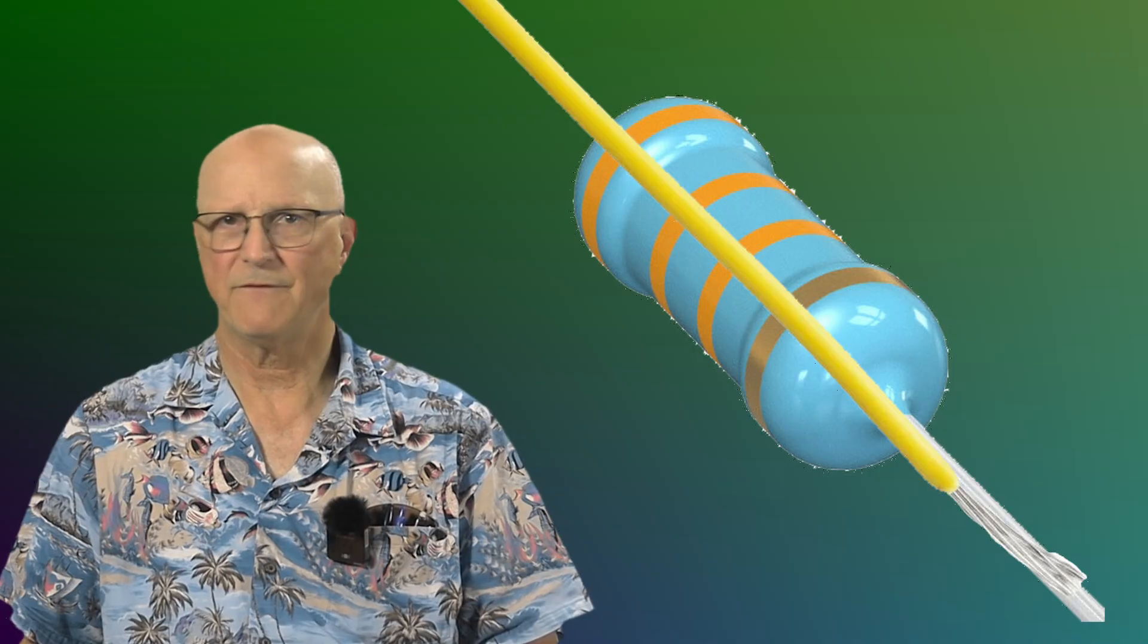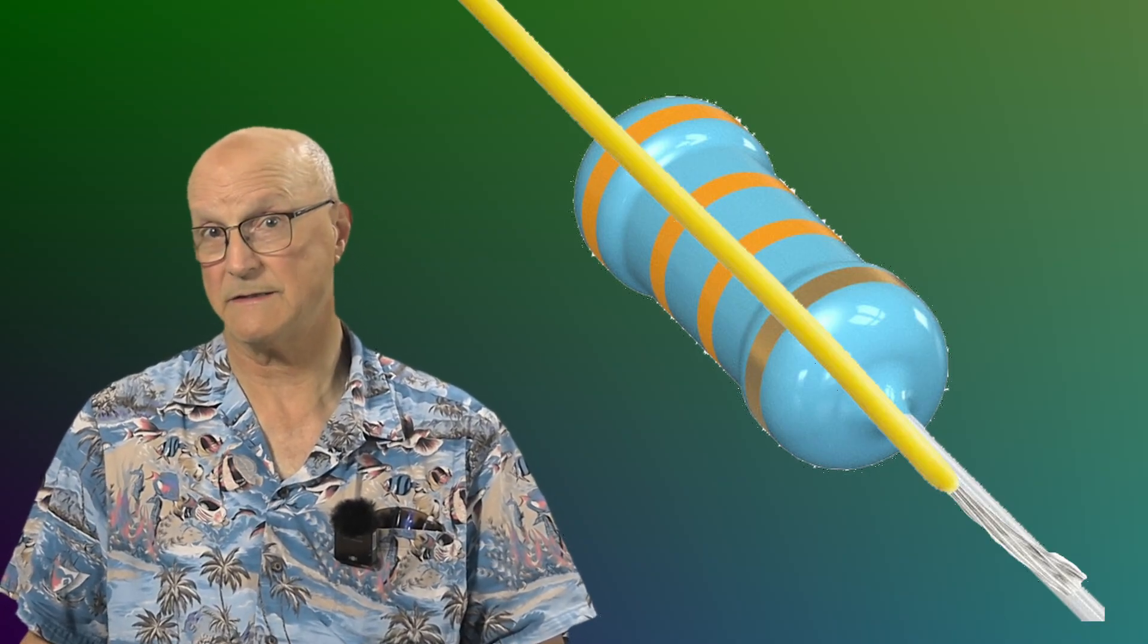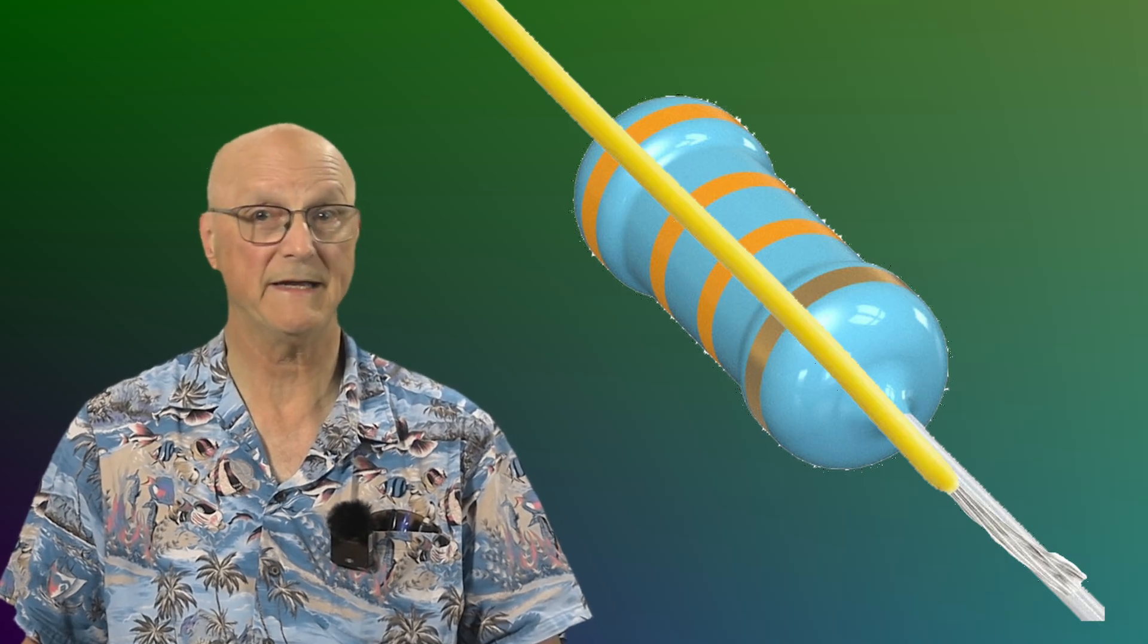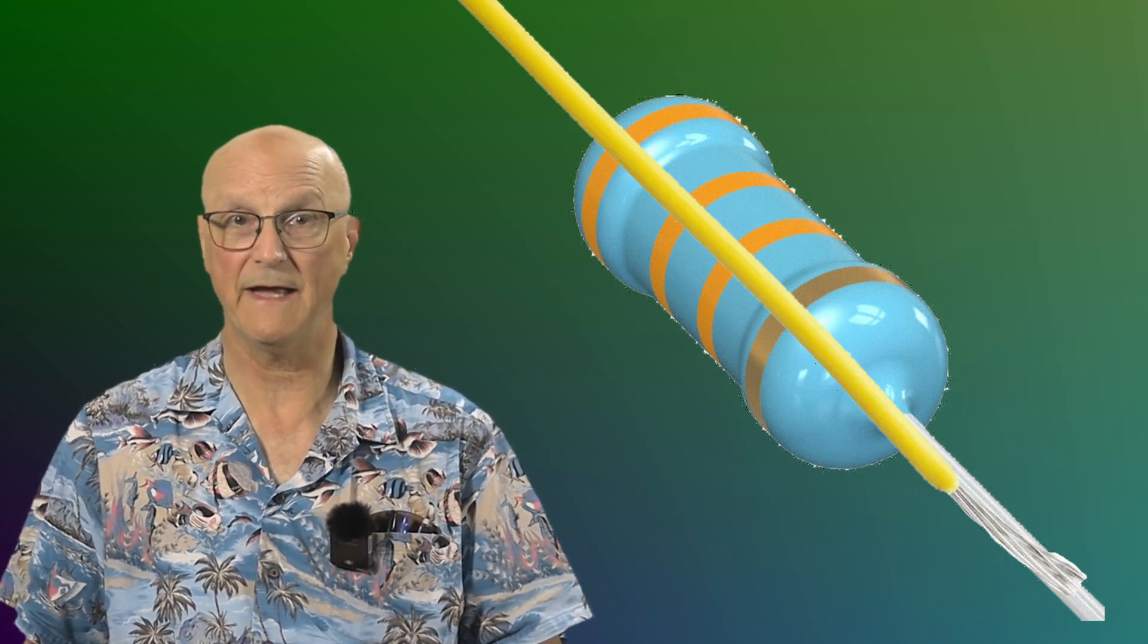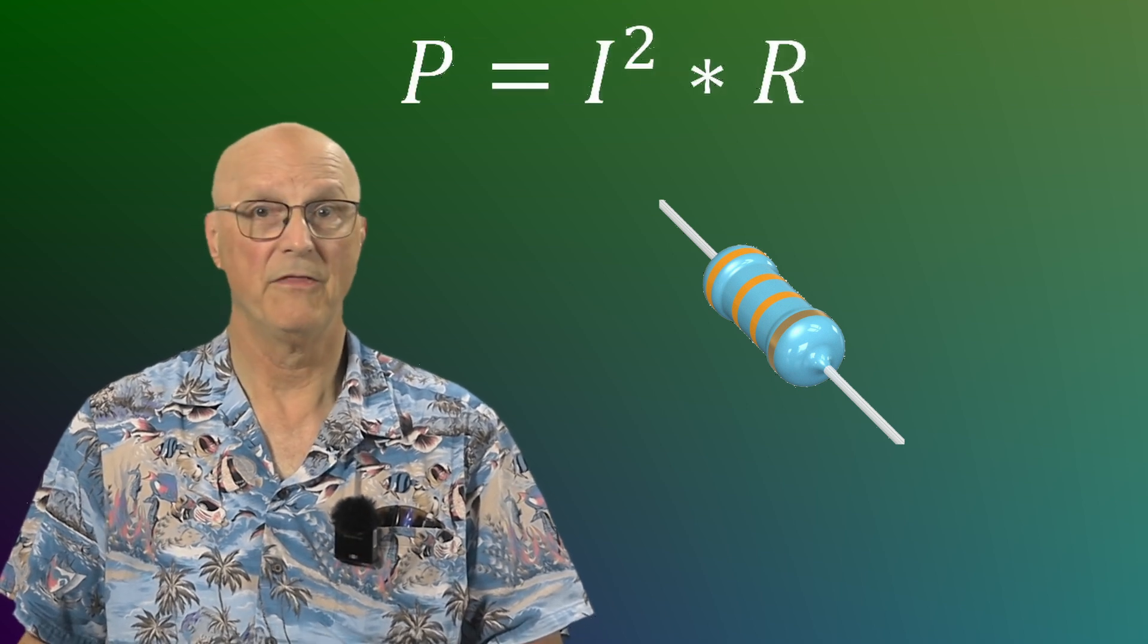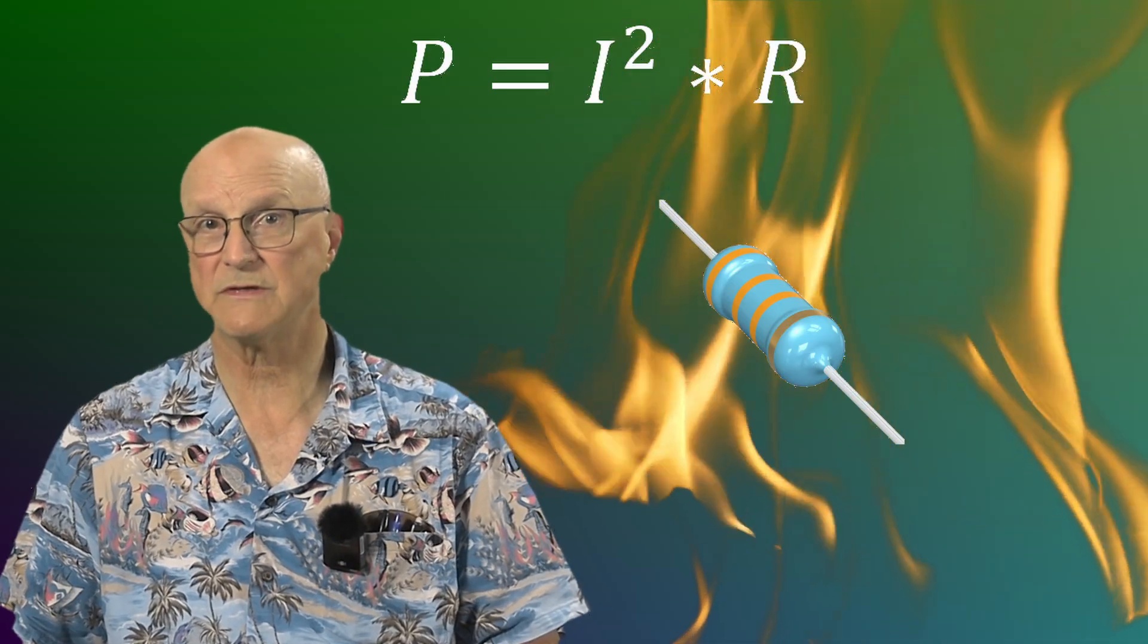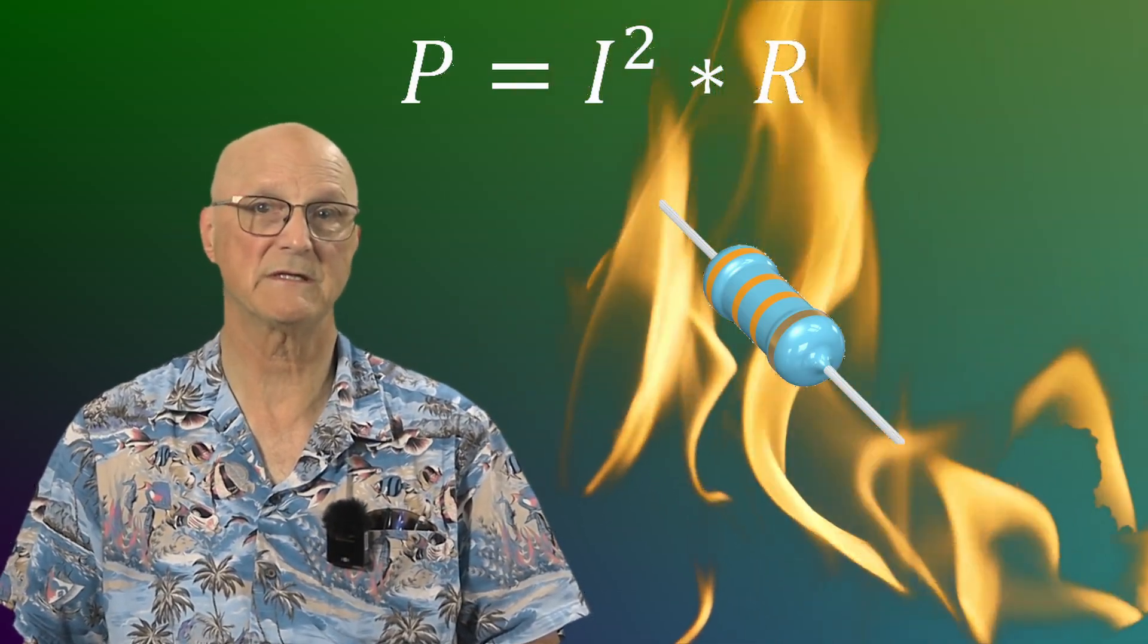Thus, every wire is a resistor. Now, granted, it's a low value resistor, but it's a resistor nonetheless. So what happens to a resistor as we run current through it? Well, Ohm's law applies, which tells us that the power dissipated in heat equals the current through it squared times the resistance of it.